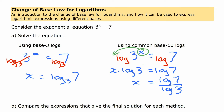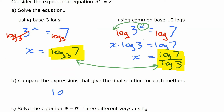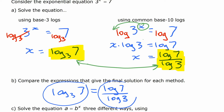We've solved it two different ways, so if x equals this and x also equals this, then both expressions must be equal. That tells us log base 3 of 7 must equal log 7 over log 3. So this is an expression with base 3 logs and this is an expression with base 10 logs — different bases used, but they're equivalent expressions.